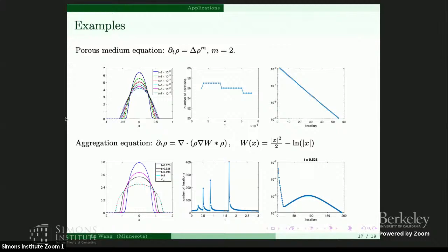The second example is the aggregation equation. With a special choice of interaction kernel, the steady state satisfies the semicircle law. The evolution is shown, along with the number of iterations at each time step. Overall we need a small number of iterations, but occasionally there are a few peaks corresponding to sharp changes in the solution — the solution is very close to zero during propagation of the sharp front, requiring a larger number of iterations. Even in the worst case, you need around 200 iterations to converge to 10^{-8}.